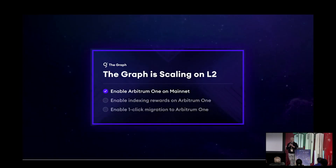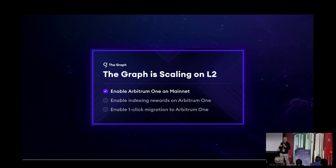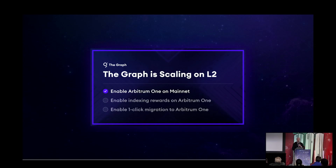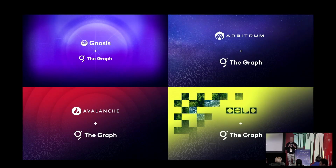The Graph contracts just scaled onto Arbitrum. The whole contracts lived on Ethereum mainnet, and now there's also an instance on Arbitrum. All the operations — publishing a subgraph, curating, becoming an indexer, allocating — are now 20x to 26x less in gas fees. The next steps will be to have indexing rewards on Arbitrum One and then a one-click easy migration path.